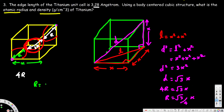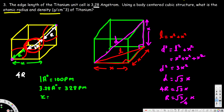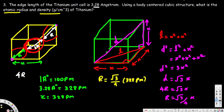Before calculating, let's convert the edge length from angstroms to picometers. One angstrom equals 100 picometers, so 3.28 angstroms equals 328 picometers. Therefore x = 328 pm. Now: r = (√3 / 4) × 328 pm, which gives us r = 142 picometers. That's the atomic radius.